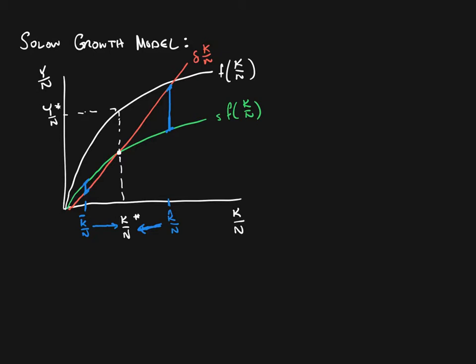At that steady state point, output is determined by going up to the production function and coming over to find Y star over N. Now I want to think about how the steady state changes if we change some of the different parameters in the model — like the saving rate, the depreciation rate, or the production function.